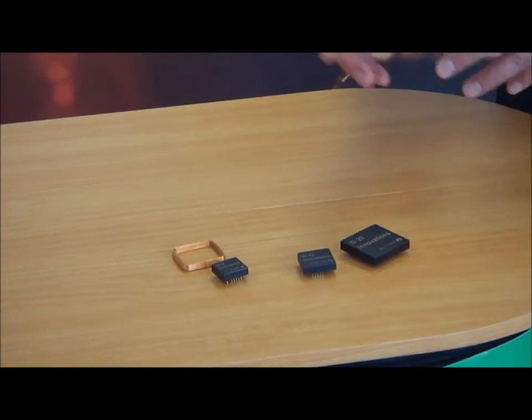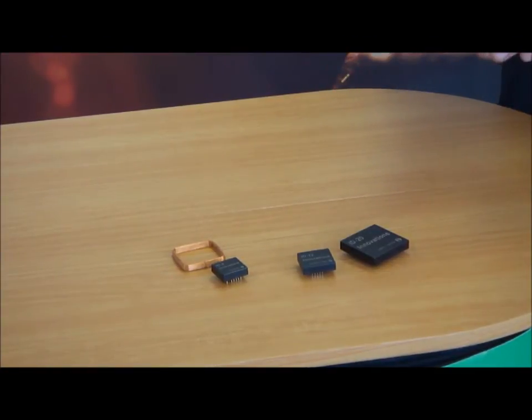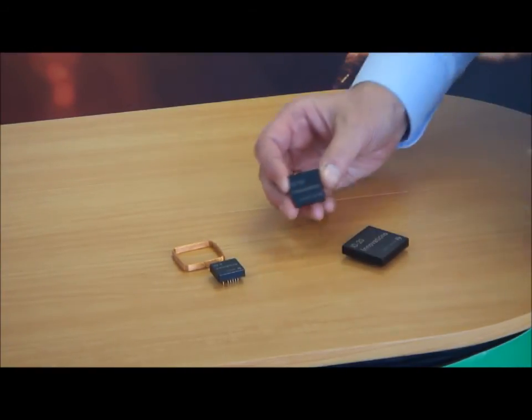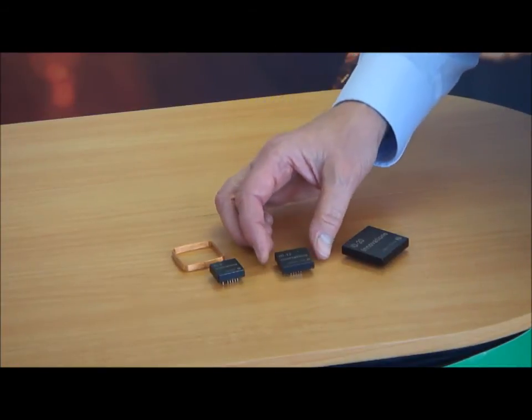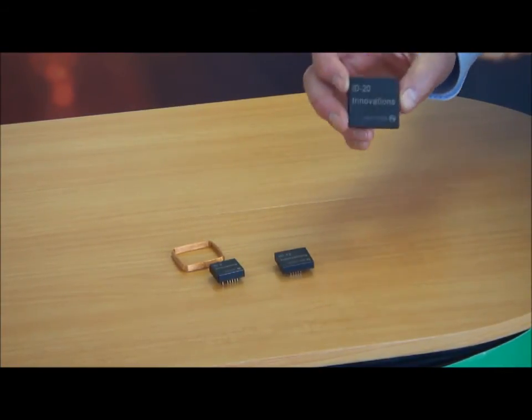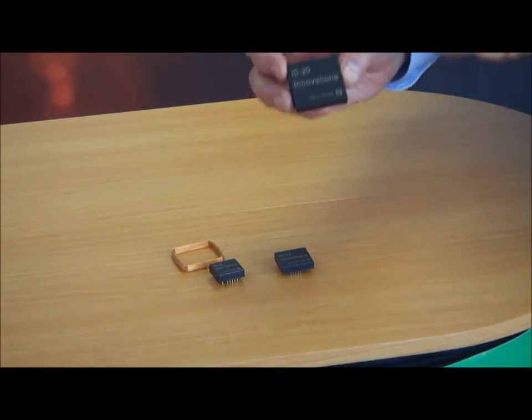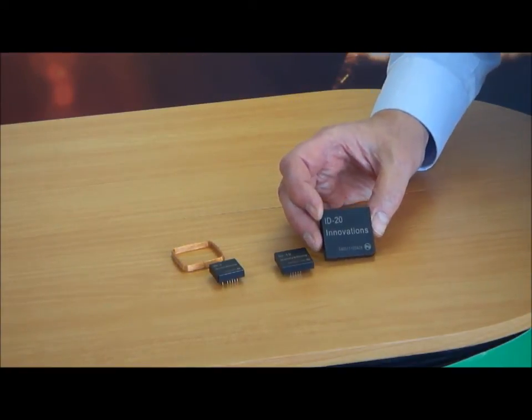If you've got a little more space for something with its own built-in antenna, the ID12 will give you maybe 8cm read range, or the ID20 up to double that at 16cm read range with low frequency tags of various types.